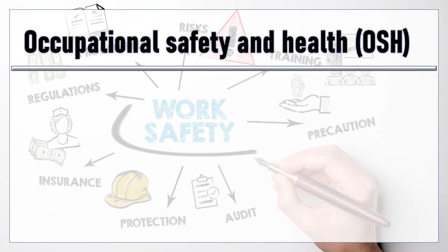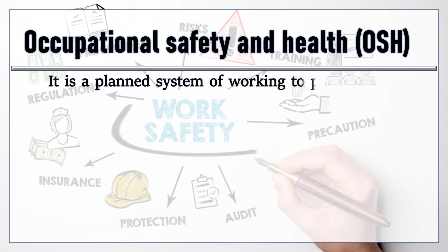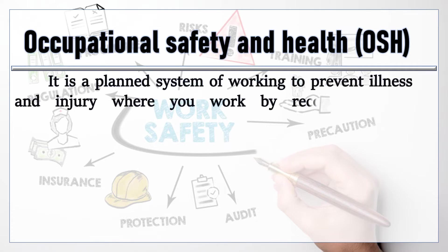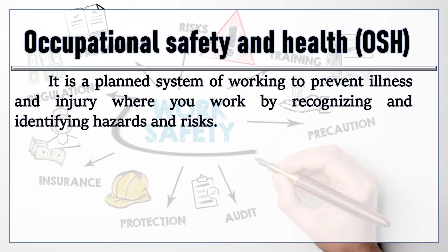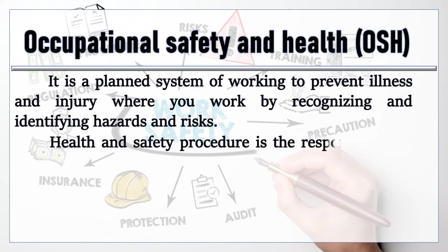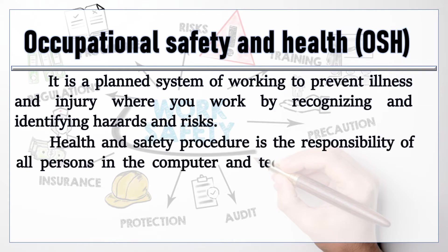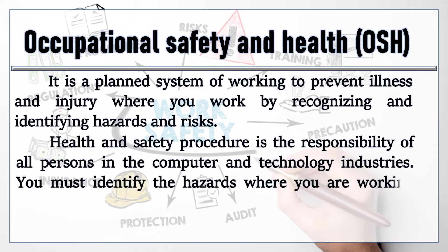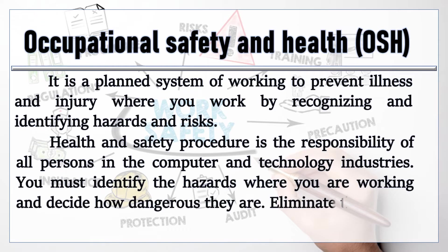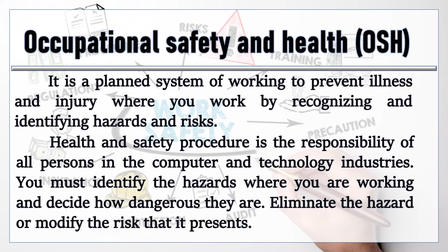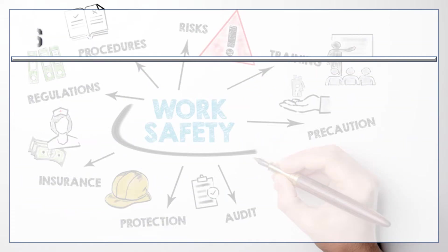What is Occupational Safety and Health, or OSH? It is a planned system of working to prevent illness and injury where you work by recognizing and identifying hazards and risks. Health and safety procedure is the responsibility of all persons in the computer and technology industries. You must identify the hazards where you are working and decide how dangerous they are, then eliminate the hazard or modify the risk that it presents.